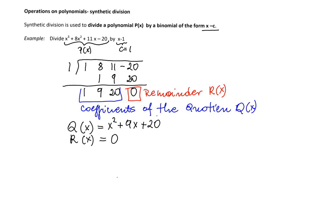Therefore, if we use the regular quotient notation that includes dividend, divisor, quotient, and remainder, we can write that x cubed plus 8x squared plus 11x minus 20, which is the dividend, divided by x minus 1, which is the divisor, equals the quotient x squared plus 9x plus 20, plus the remainder over the divisor, which becomes simply the quotient.